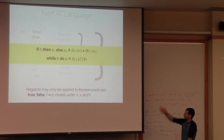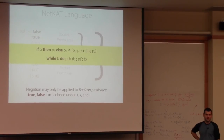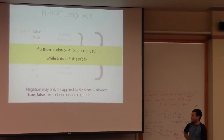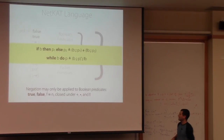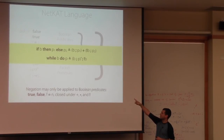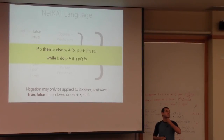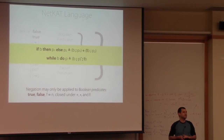You can encode other familiar constructs in terms of these operators. If you have conditionals — if B then P1 else P2 — that's just the union of the test B guarding P1, and the negation of B guarding P2. Likewise, a while loop is a combination of the loop guard B composed with P-star, then not-B when you exit the loop. Now let's look at semantics. For the syntactic definition of the language, we're going to interpret these programs as functions.